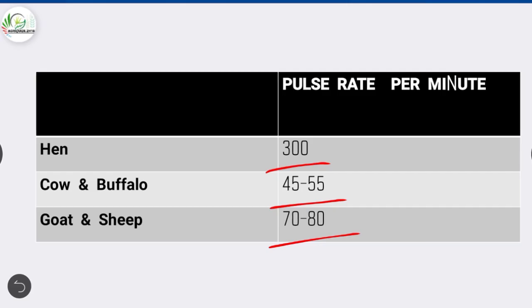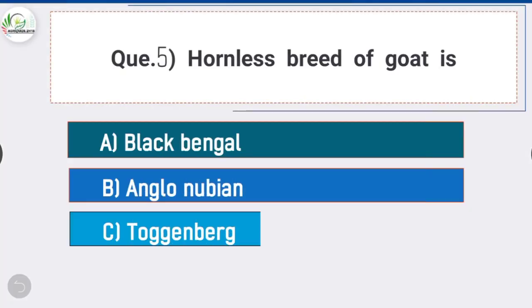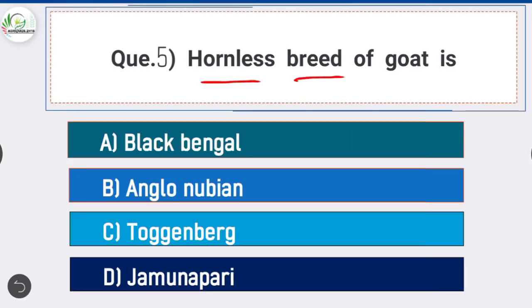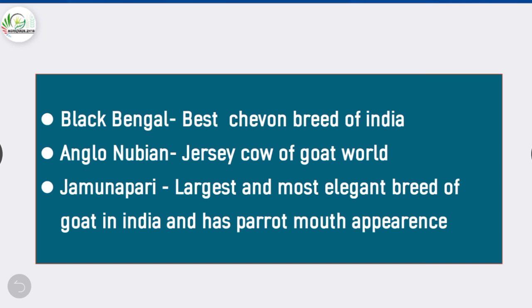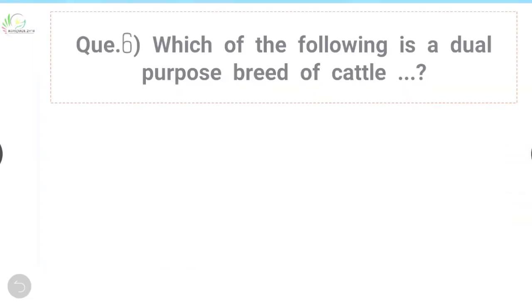Question number five: which is the hornless breed of goat? The answer is option C - Toggenburg. Toggenburg is the hornless breed of goat. Black Bengal is the breed of goat best suited for chevon. Anglo-Nubian is the goat breed known as the jersey cow of goat, and Jamunapari is the largest and most elegant breed of goat in India, known for its parrot mouth appearance.